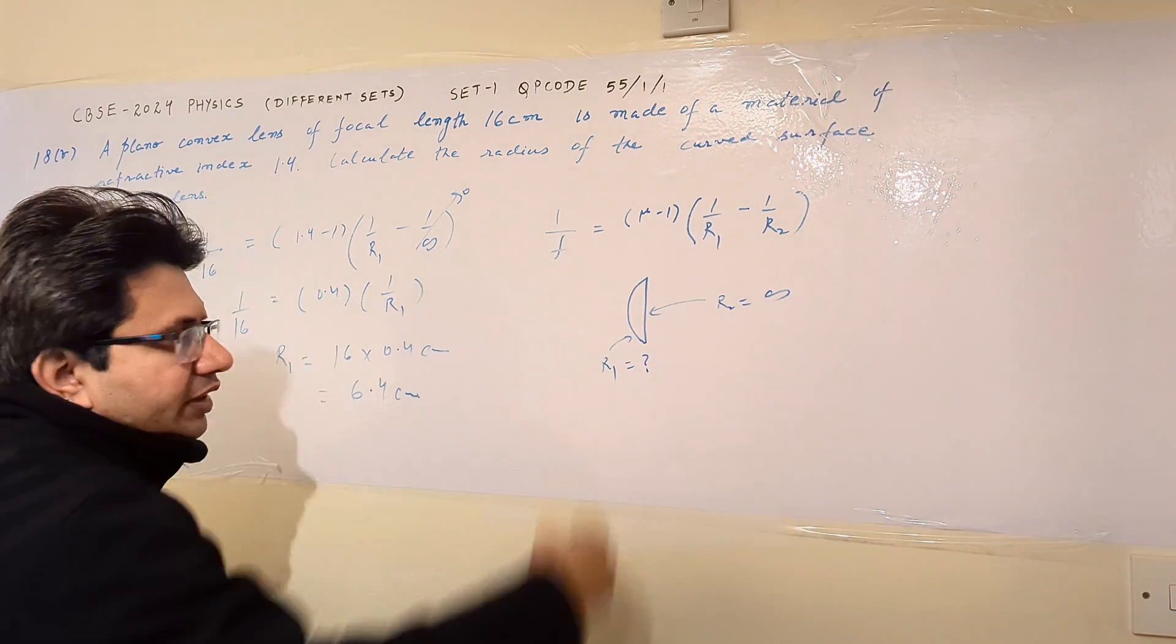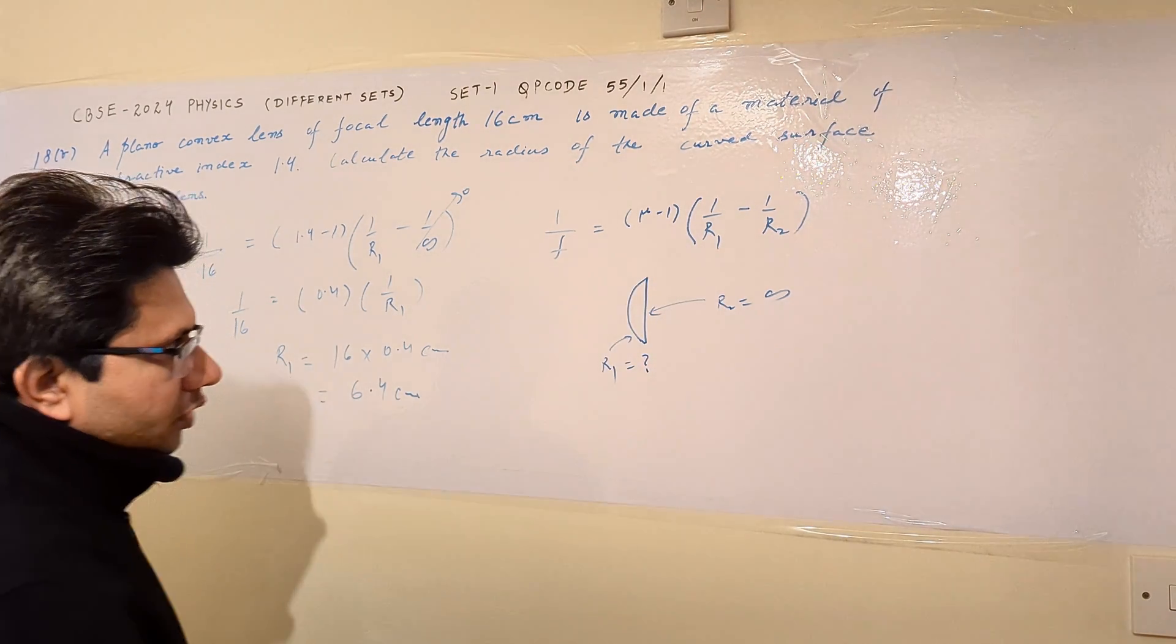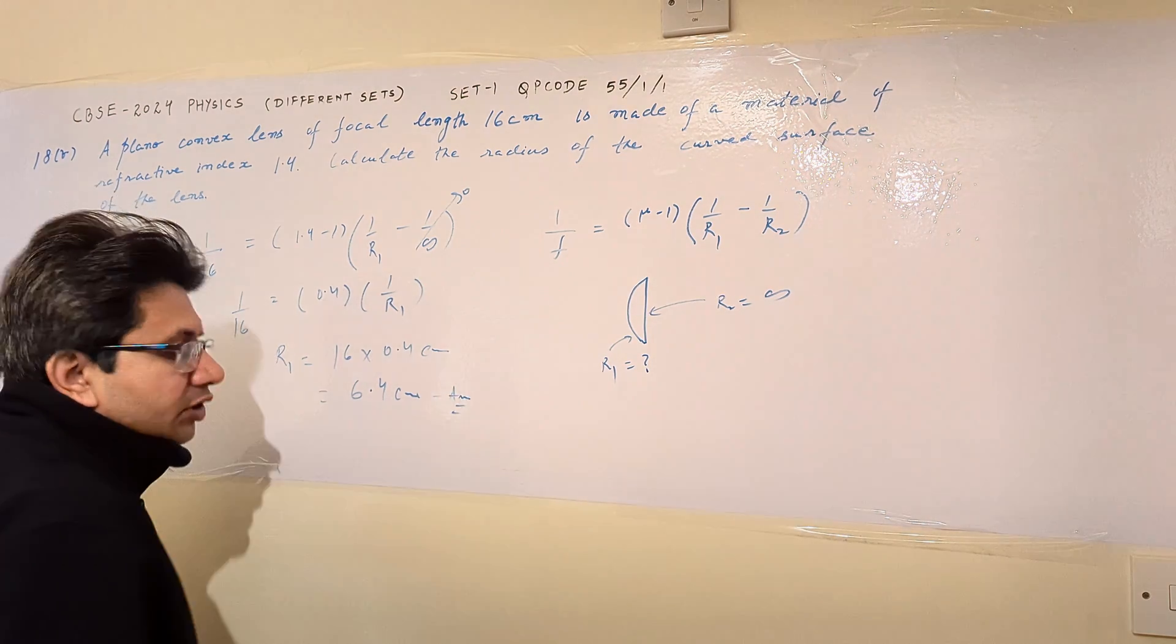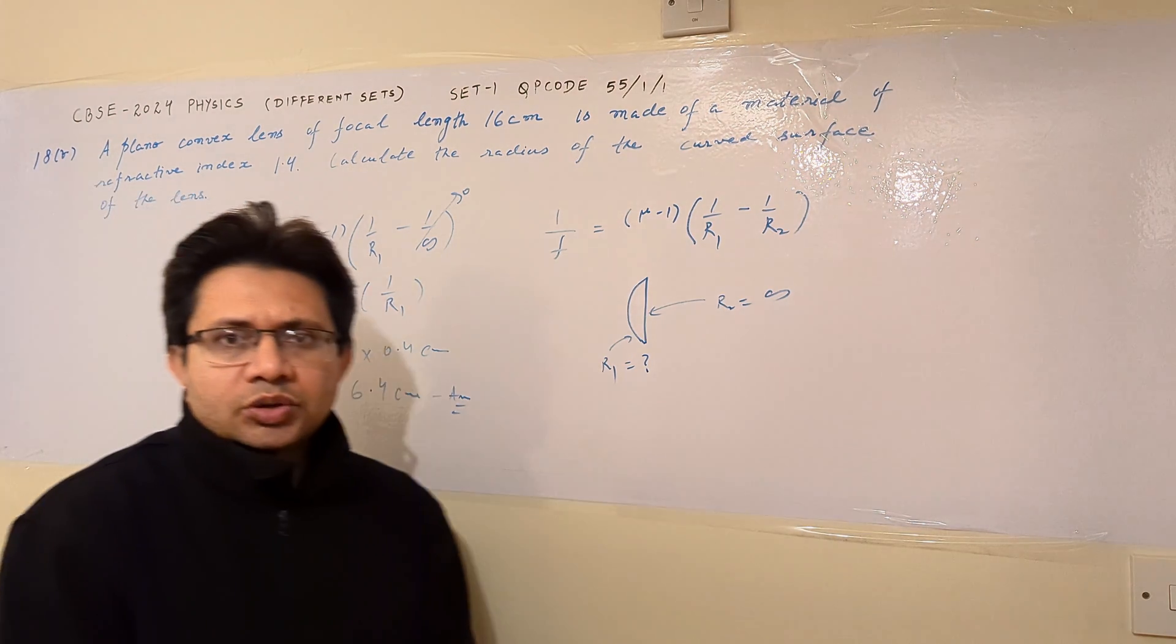This is the radius of the convex side, the curved side of this particular lens. The final answer is 6.4 centimeters. Thank you.